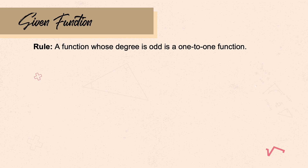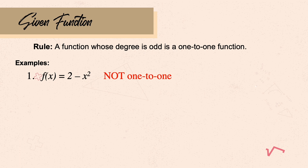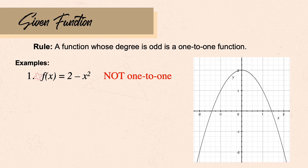Lastly, you can identify if a given function is one-to-one using the function itself. The rule is: a function whose highest degree is odd is a one-to-one function. For example, f(x) = 2 - x² has degree 2, which is even, so it is not one-to-one. Any parabola is not a one-to-one function. This is consistent with the horizontal line test — its graph intersects a horizontal line twice.